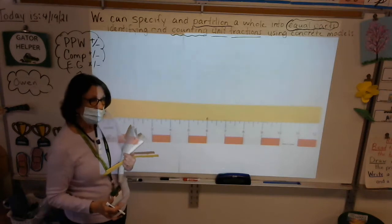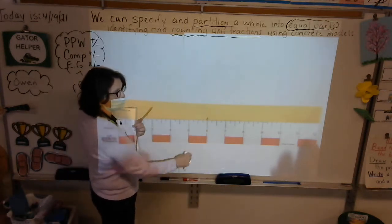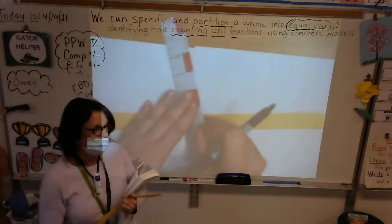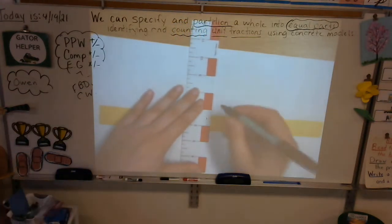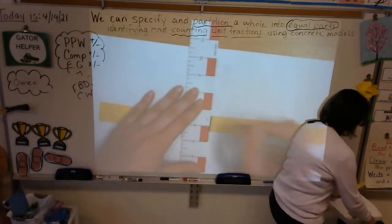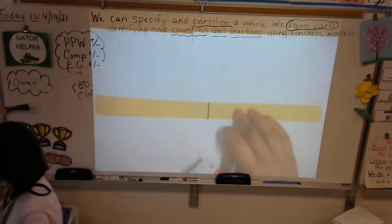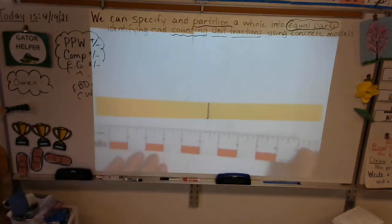Go ahead and draw a line where you made that mark at six inches, using your ruler. Look at Miss Zimmer — see how she's using her ruler so it's nice and straight. If you need help, just raise your hand. Draw a line at six inches, and watch what Miss Zimmer is doing.